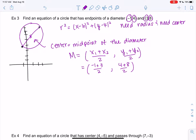All over 2, and then for y we get 4 and 8, 4 plus 8 over 2. So what do we get? Negative 1 plus 3, positive 2 over 2, which is 1. And then we get 12 over 2, which is 6. Yeah, that makes sense with the picture. The center would be 1, 6. So that would be my h and my k.